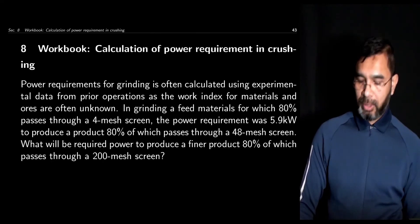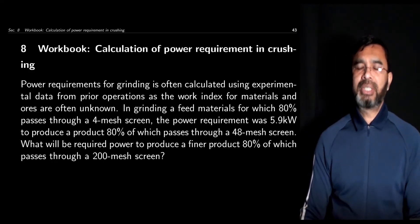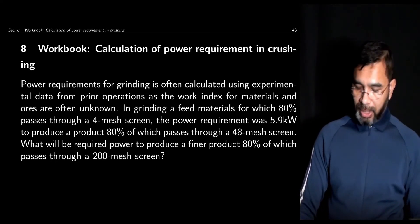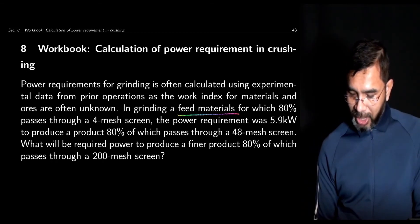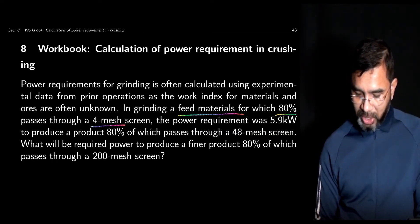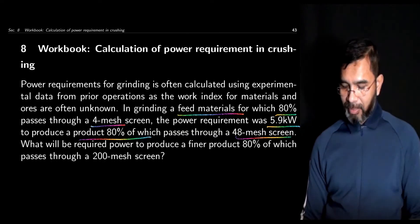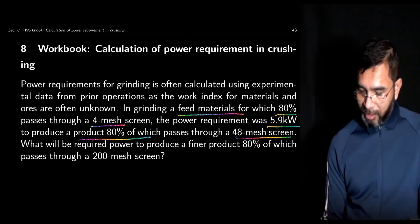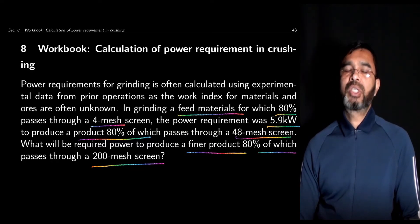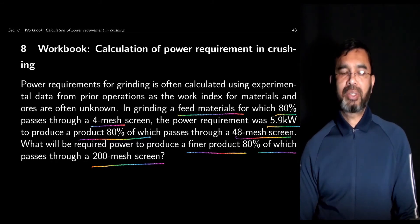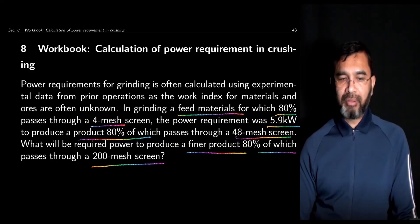In this session we do a workbook problem on the calculation of power requirement in crushing. This is a typical problem in commercial crushing exercises. In many cases a precise value of work index is not known; the required power is calculated based on previous data on power requirement. The problem states: in grinding a feed material for which 80% passes through a 4-mesh screen, the power requirement was 5.9 kilowatts to produce a product 80% of which passes through a 48-mesh screen. What will be the power required to produce a finer product 80% of which will pass through a 200-mesh screen? The size is defined as the screen through which 80% of the material passes, consistent with how the work index is defined.